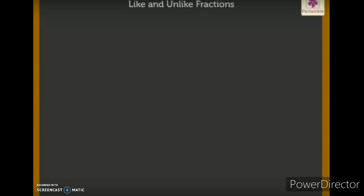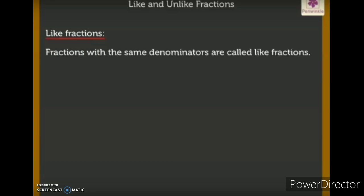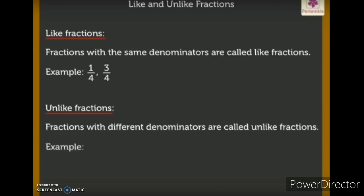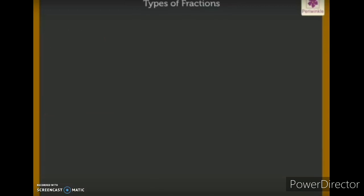Based on the denominator, you can divide fractions into like fractions and unlike fractions. Fractions with the same denominators are called like fractions — for example, one by four and three by four. Fractions with different denominators are called unlike fractions — for example, five by eight, five by three, and two by seven.